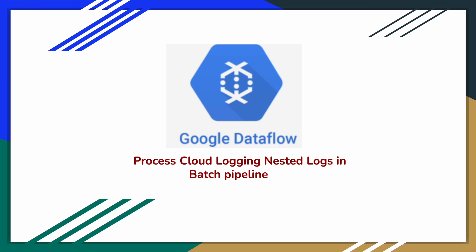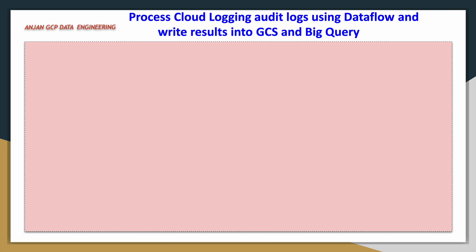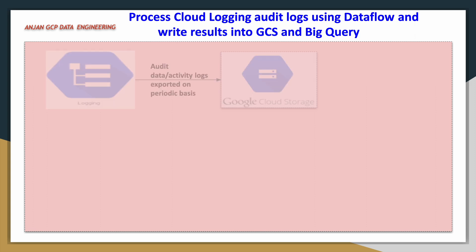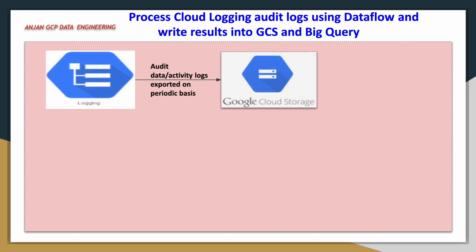In this video, we will see how we can process logs exported to a GCS bucket by using a Dataflow batch job, and we will try to insert that processed or transformed data into a GCS bucket. In parallel, we will also try to insert the data into a BigQuery table. We have already seen how to export audit logs — whether activity logs or data access logs — into a GCS bucket.